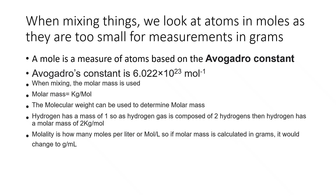When mixing atoms together, we talk about how many moles are in a mixture. We calculate the molar mass in kilograms per mole, though grams per mole is sometimes used. Avogadro's number tells you how many atoms are in a gram of any particular molecule.